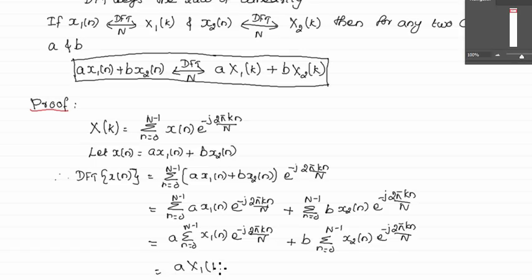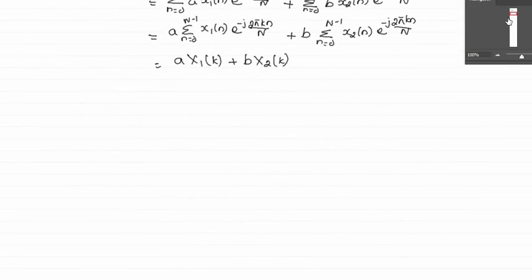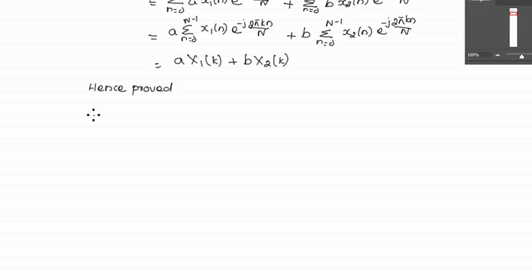The DFT of the sequence x1(n) is given by X1(k). Similarly for the second term, the summation from n=0 to N-1 of x2(n)·e^(−j2πkn/N) is equal to the DFT of x2(n), which is X2(k). So the result is a·X1(k) + b·X2(k). Hence it is proved that the N-point DFT of a·x1(n) + b·x2(n) equals a·X1(k) + b·X2(k).